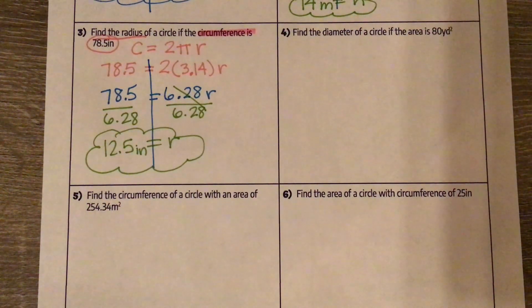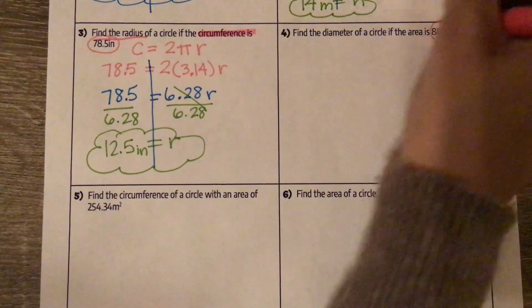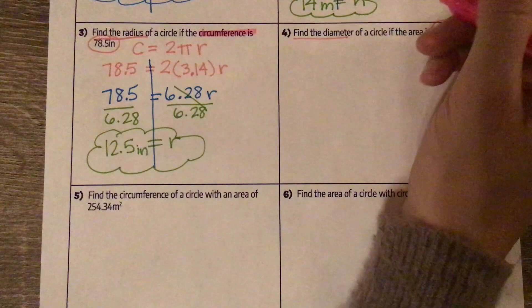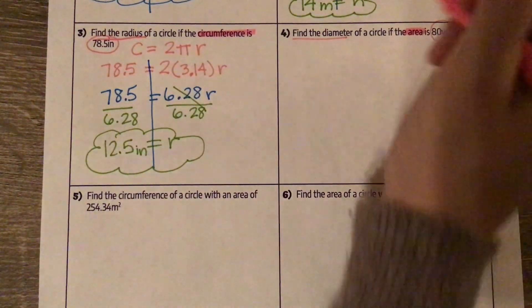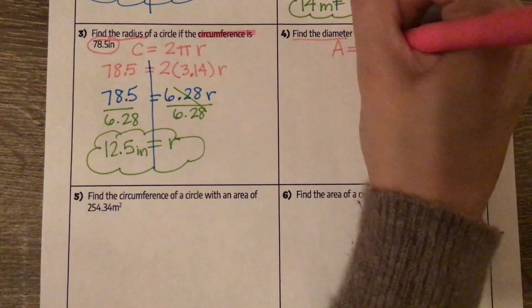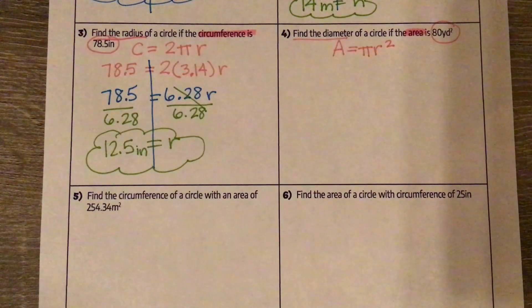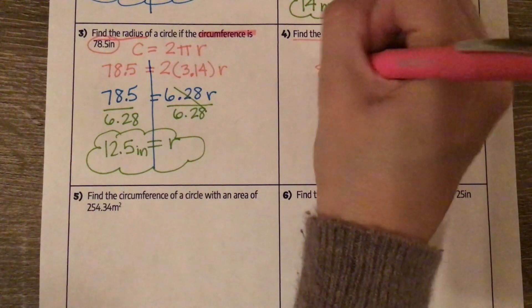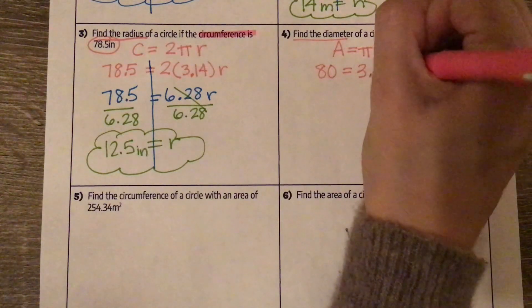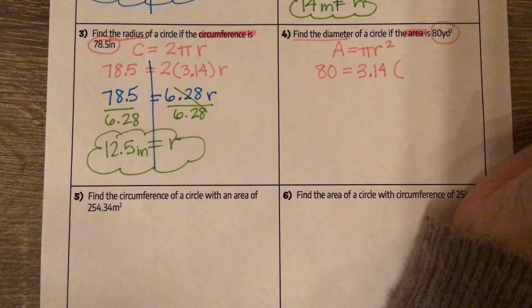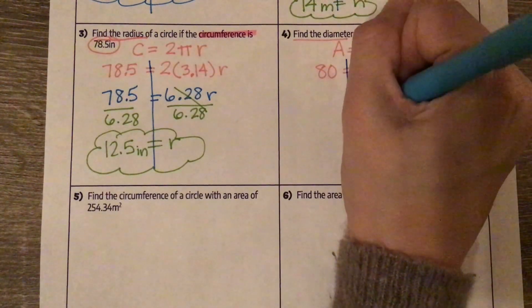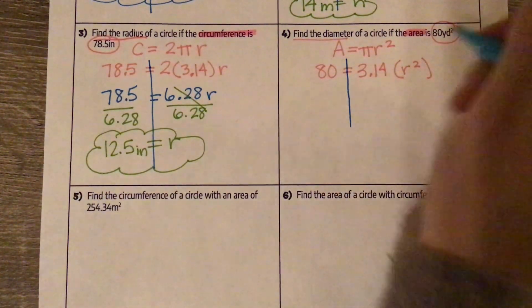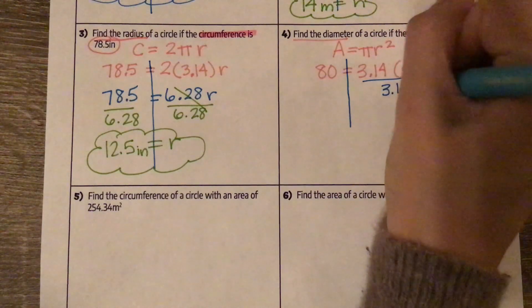Number four: find the diameter of a circle if the area is 80 yards squared. We are finding the diameter and we have the area. We can't pick and choose what formula to use — even though the area formula doesn't use diameter, we can find the radius and then use that to find the diameter. So our area formula is area equals πr². Plugging in: 80 equals 3.14 times r squared. R squared is being multiplied by 3.14, so we're going to get rid of it by dividing by 3.14.